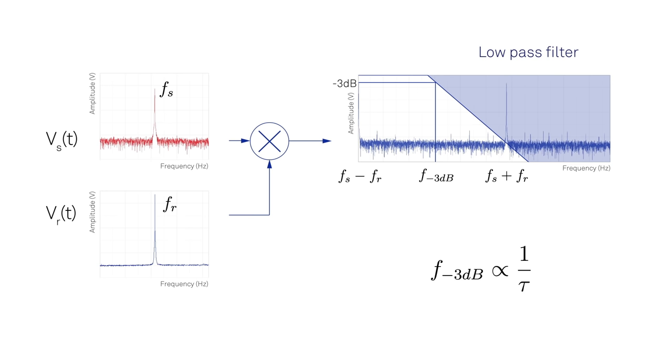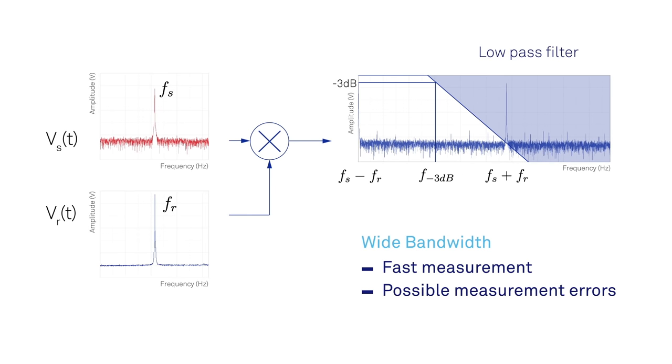Setting the filter bandwidth is always a trade-off. Making it too wide will lead to systematic measurement errors, as the 2f component may be leaking into the output signal. Moreover, a larger bandwidth means more noise, and hence a lower signal to noise ratio.